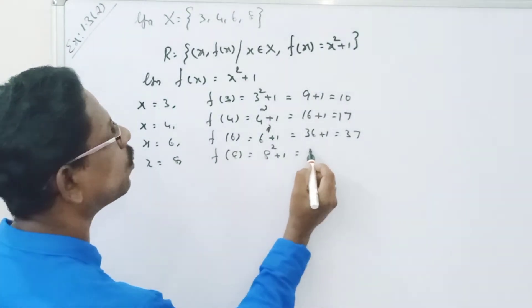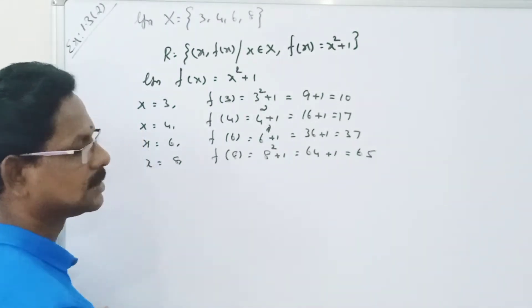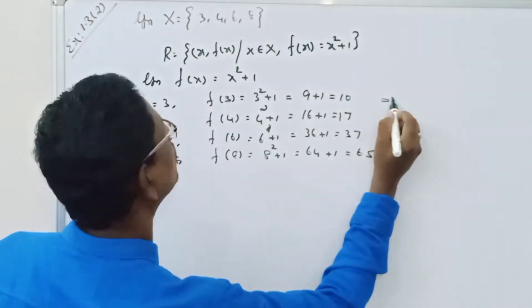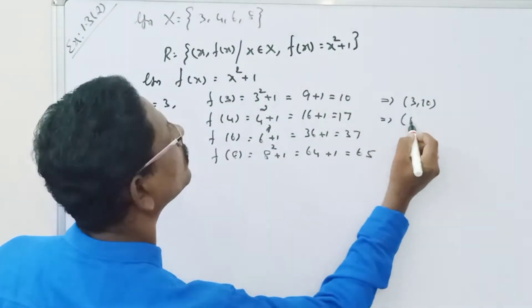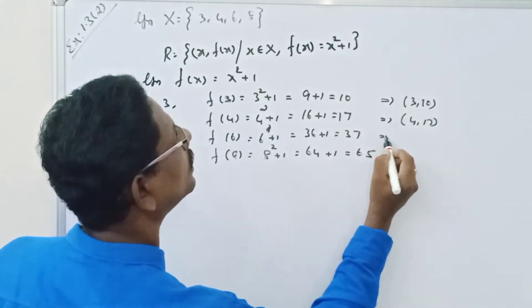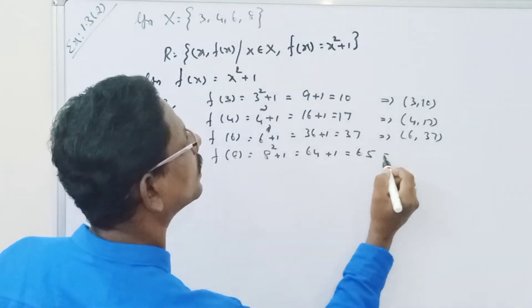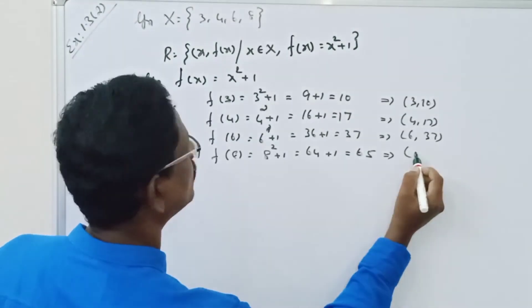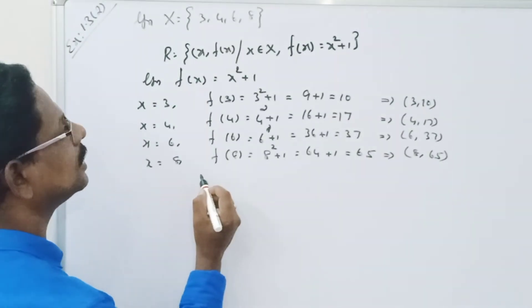When x is equal to 8, f of 8 is equal to 8 square plus 1, 64 plus 1, equal to 65. So this symbol is 3 comma 10, this symbol is 4 comma 70, this symbol is 6 comma 37, this symbol is 8 comma 65.